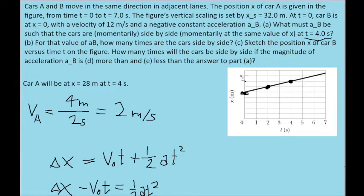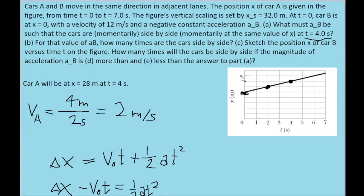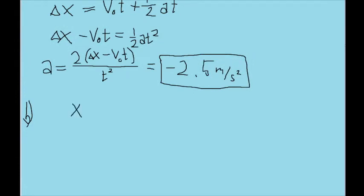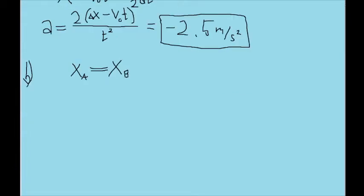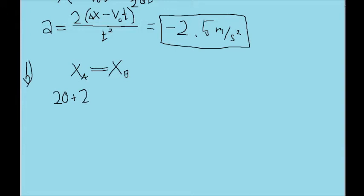Part B asks us to find how many times the cars are side by side, the number of times that this happens. Now really what this is asking about is the number of times at which the position of both cars are the same. So we want to get formulas for the position of both cars. Now fortunately for both cars, this is fairly straightforward. For car A, the position is just going to be its initial position, which is given to us by the graph as 20 meters, plus 2t, since that's the slope of the graph, the car's speed, multiplied by the independent variable here.